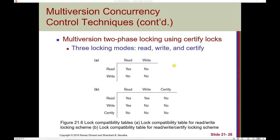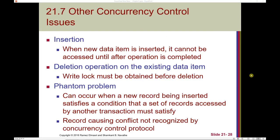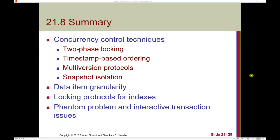In multi-version timestamp ordering, two timestamps — read and write — are stored with each version. Multi-version two-phase locking includes read and write locking but also adds a certify lock. In the standard scheme a write lock is exclusive, so no other transaction can access the item. In the multi-version scheme, reads can proceed concurrently with a single write operation. Before a transaction commits, it must obtain exclusive certify locks on all updated items. Additional issues include insertion, deletion requiring a write lock, and the phantom problem.